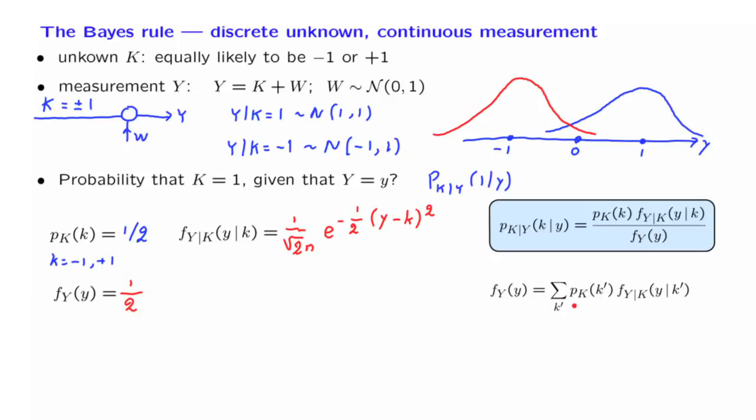From the first choice, we have 1 half times the density of Y, when K is equal to minus 1, and when K is equal to minus 1, we obtain this expression. And we have another term that corresponds to the case where K is equal to plus 1, in which case we have this expression here.